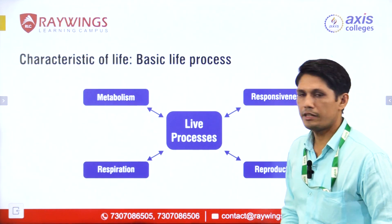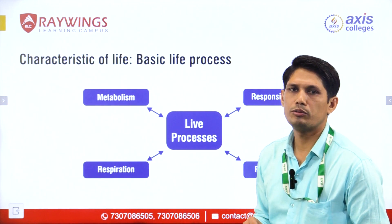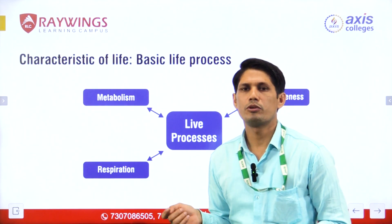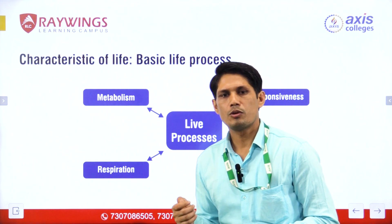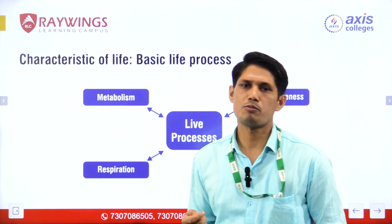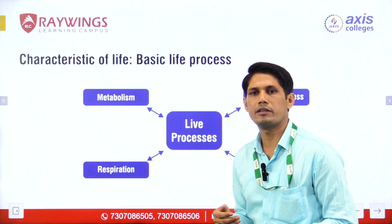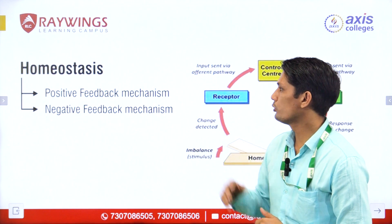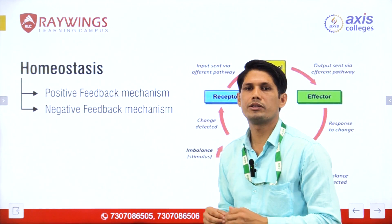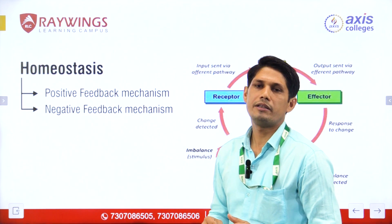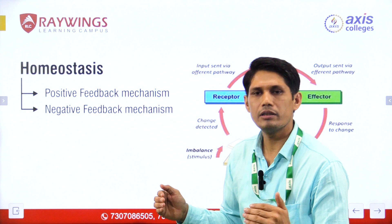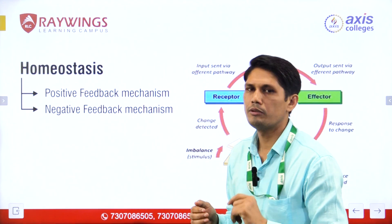Basic life processes: metabolism is divided into catabolism and anabolism. Catabolism means the breakdown of larger molecules into simple molecules. Anabolism is the building up of smaller molecules into complex molecules. Responsiveness is the body's ability to recognize and detect a stimulus and respond to it. Respiration is the exchange of gases between the internal and external environment. Homeostasis involves positive and negative feedback mechanisms — positive feedback makes an abnormal condition more abnormal, while negative feedback maintains fluctuation within the set point.